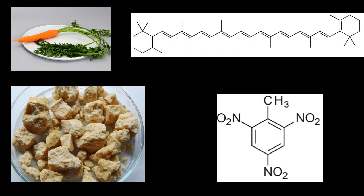The IB curriculum also wants you to know that other molecules have conjugated bonds, such as beta-carotene, which gives carrots their orange color because every color except orange is absorbed by this molecule. There's also trinitrotoluene (TNT), an explosive with conjugated double bonds that extend into the NO₂ groups — though that's beyond the IB — and it has a light yellow color.